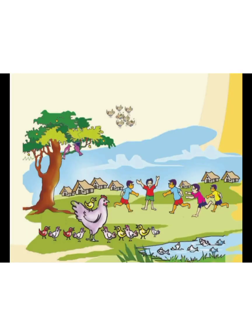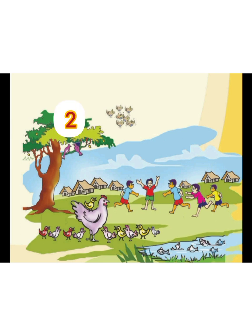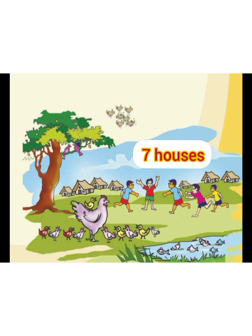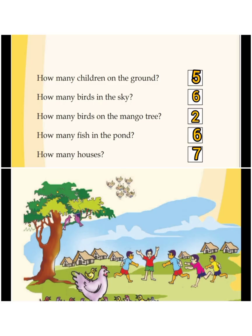There are five children on the ground, six birds in the sky, two birds on the mango tree, six fishes in the pond, and seven houses in this picture. All of you complete this activity in your textbook.